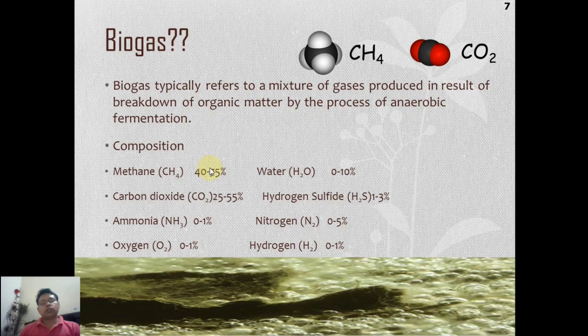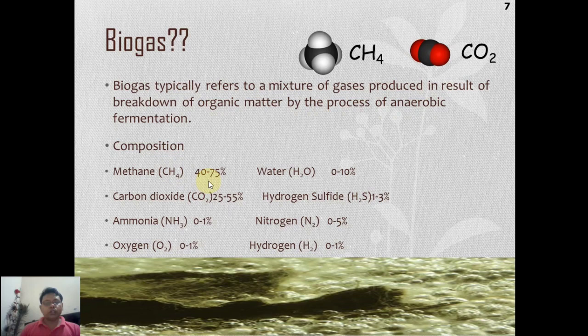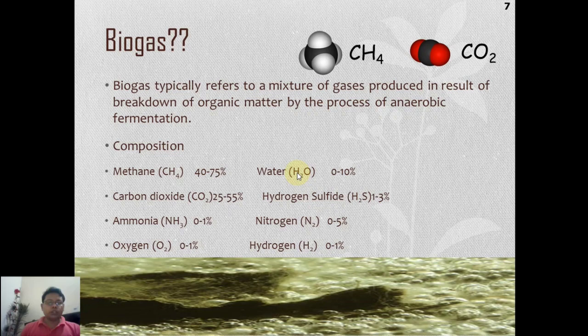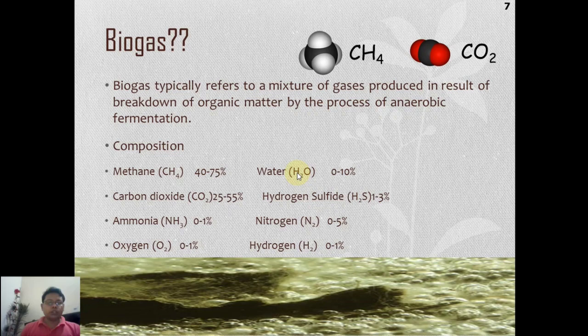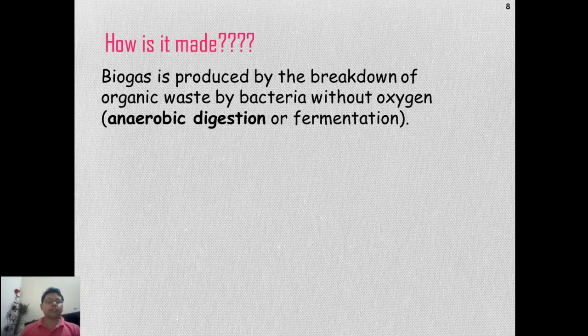The particular composition values depend on so many parameters, including conditions inside the digester. We are mainly focused on methane — the larger the quantity of methane in the biogas, the better the biogas yield. We need to scrub out the unwanted gases — CO₂, H₂S, and ammonia — as they are very harmful gases. They need to be scrubbed out before bottling the biogas so it can be used in automotives. Water also needs to be removed. Biogas is basically produced by the breakdown of organic waste by bacteria without oxygen — this process is known as anaerobic digestion, meaning the process happens in the absence of air.